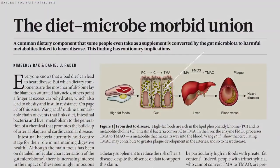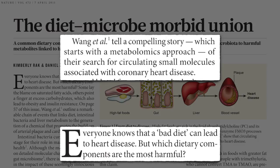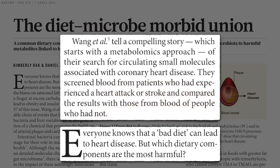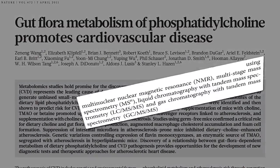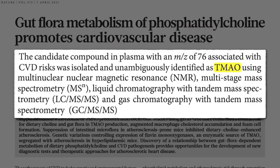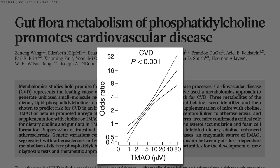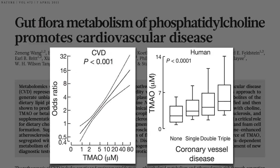Metabolomics is where the story of TMAO started. Everyone knows that a bad diet can lead to heart disease, but which dietary components are the most harmful? Researchers at the Cleveland Clinic screened blood from patients who had experienced a heart attack or stroke, and compared the results with those from blood of people who had not. Using all sorts of fancy technology, they identified a compound called TMAO, which stands for trimethylamine oxide. The more TMAO people had in their blood, the greater the odds they had heart disease, and the worse their heart disease was.